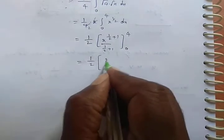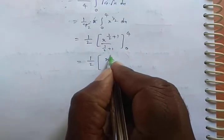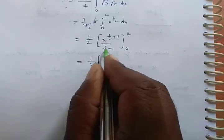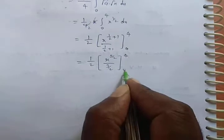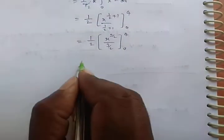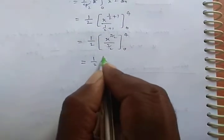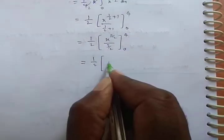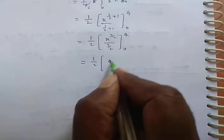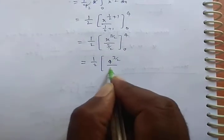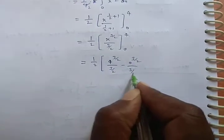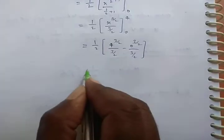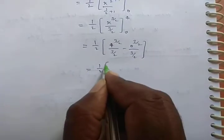Which is equal to 1/2, x^(1/2 + 1) is x^(3/2). So 1/2 + 1 is 3/2, divided by 3/2, upper limit 4, lower limit 0.